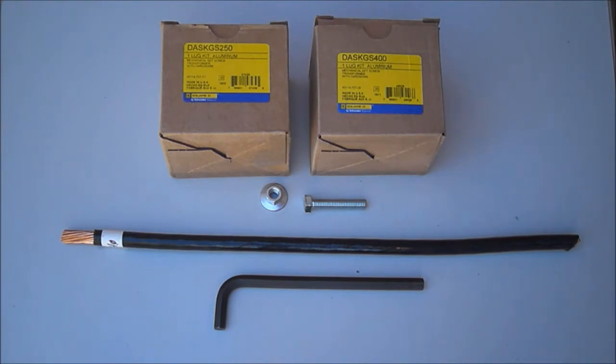EE, EX, and NV transformers by Square D Schneider Electric use DASKP lug kits for the primary and DASKGS lug kits for the secondary. Seen here are some samples of transformer secondary lug kits, DASKGS-250 and DASKGS-400.